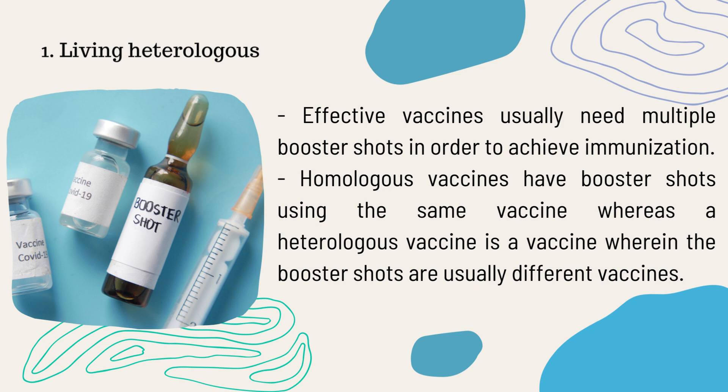The first type of vaccine is the living heterologous vaccine. Effective vaccines such as the COVID vaccines usually need multiple booster shots in order to achieve immunization. Homologous vaccines, in contrast to heterologous vaccines, use the same type of vaccine as booster shots, whereas heterologous vaccines use different vaccine types as booster shots.